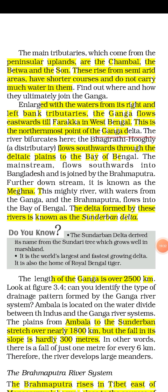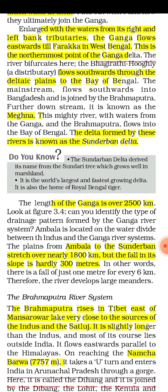Next we discuss the peninsular tributaries of Ganga, which come from the peninsular upland area — these are Chambal, Betwa, and Son. Because they are coming from the peninsular region, which has no glaciers, their course is very short. So Ganga has two types of tributaries: Himalayan tributaries and peninsular tributaries.